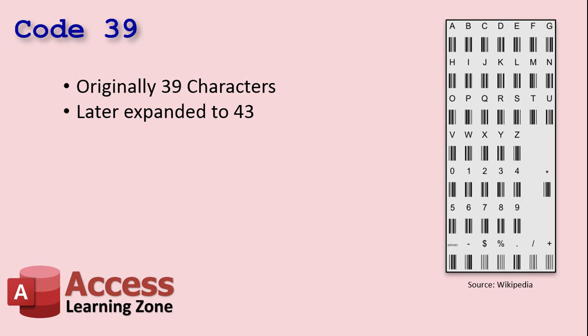Code39 was named that because it originally had 39 characters, then they expanded it to 43. You might sometimes see it referred to as Code39 mod 43 — there's a bunch of different names for it. The characters you can use are uppercase letters, numbers, and some punctuation including the space, dollar sign, percent sign, period, and so on. We're only going to focus on using letters and numbers.